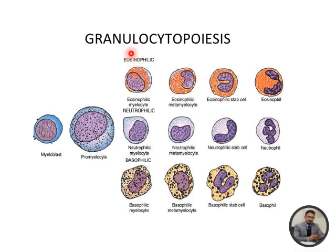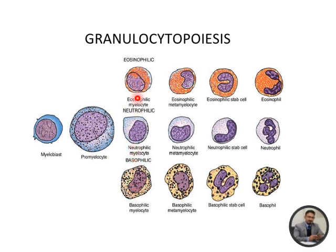You can see this diagram of granulopoiesis. First we have the myeloblast, then it matures and differentiates into the next cell known as promyelocyte. The promyelocyte then matures into myelocyte, then metamyelocyte, then it becomes a band cell, and finally it becomes a mature neutrophil. All three cells — eosinophil, basophil, and neutrophil — follow the same staging system.